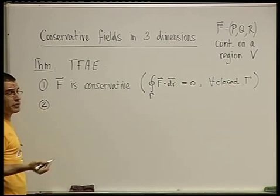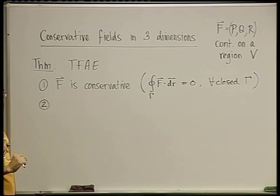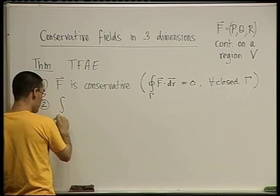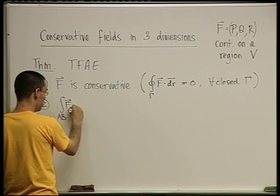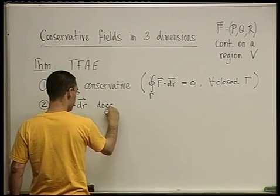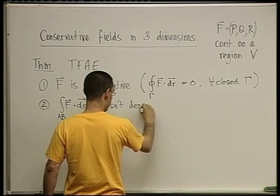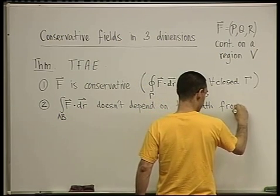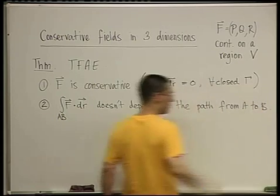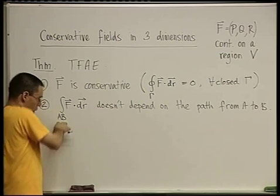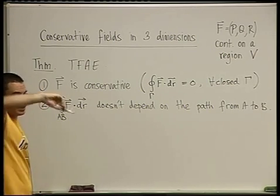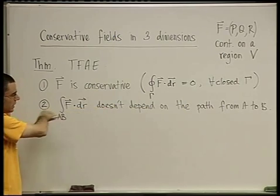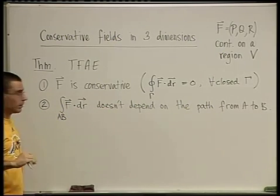Two: This should look extremely familiar, because there's nothing 3D in what I've written so far — this was exactly the same for 2D. The line integral over some path from A to B of F does not depend on the path or the curve from A to B. So if you do work along some curve connecting two points A and B, it's the same regardless of which path you take.